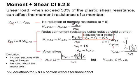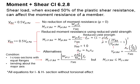The first method uses the reduced yield strength, which is determined by ρ (rho). The equation for ρ is given here, as a function of shear load with respect to the shear capacity.